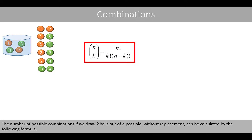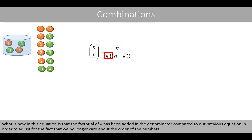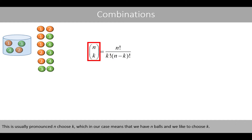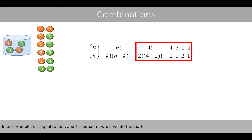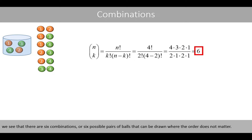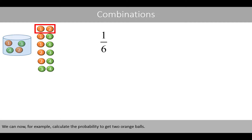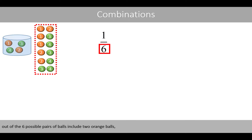The number of possible combinations, if we draw k balls out of n possible without replacement, can be calculated by the following formula. What is new is that the factorial of k has been added in the denominator to adjust for the fact that we no longer care about the order. This is usually pronounced 'n choose k'. In our example, n equals 4 and k equals 2, giving us 6 combinations. We can now calculate the probability to get 2 orange balls: since only 1 out of the 6 possible pairs includes 2 orange balls, the probability is 1 over 6.